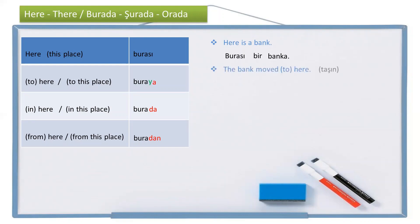The bank moved here — the bank moved to this place. How am I going to say it? Banka, to here — bura plus -a, but two vowels cannot be together in Turkish grammar, so I need a buffer letter: buraya. Moved — taşındı. So: banka buraya taşındı. The next one — the bank is in here, in this place. Banka bura-da: banka burada.